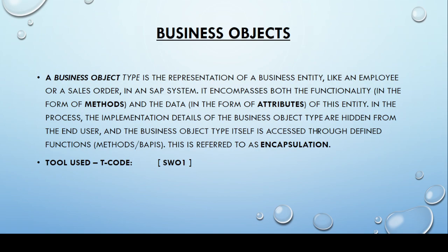BAPI lies under the umbrella of business objects. A business object type is the representation of a business entity like an employee or a sales order in an SAP system. It encompasses both the functionality in the form of methods and the data in the form of attributes of this entity. The business object is a combination of methods and attributes of an entity.